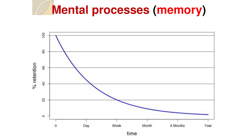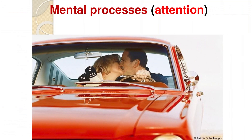Another process on which our security depends is attention — the ability to concentrate on a single object. It is very difficult for a person to keep several objects under control at the same time. From the point of view of physiology, attention creates a zone of excitement in the cerebral cortex, surrounded by a braking zone. As a result, we clearly perceive the object our attention is directed at, but perceive other objects worse. In a zone of potential danger, our attention should be directed to a possible source of threat.